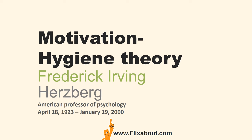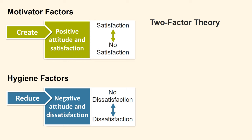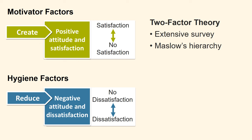Frederick Irving Hertzberg was an American psychologist who became one of the most influential names in business management. Hertzberg proposed the Motivation Hygiene Theory in 1959 in the book The Motivation to Work. The theory is also known as the two-factor theory of job satisfaction, and is often used in the context of Maslow's hierarchy of needs.